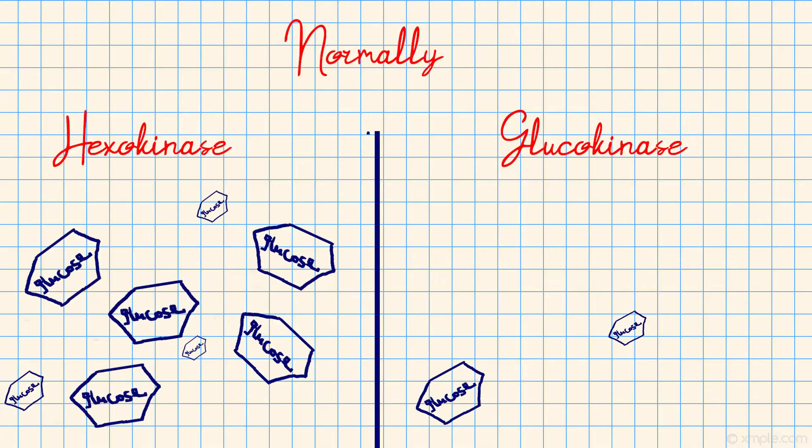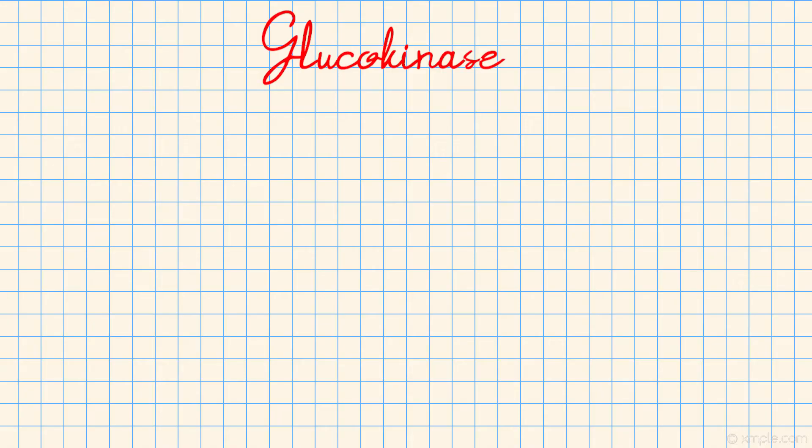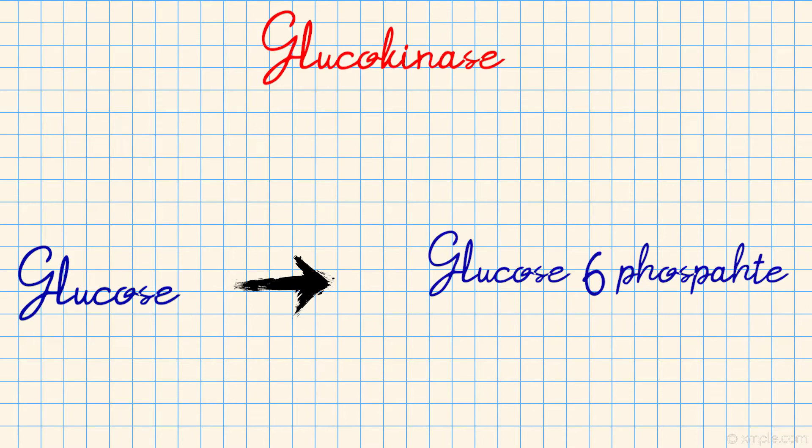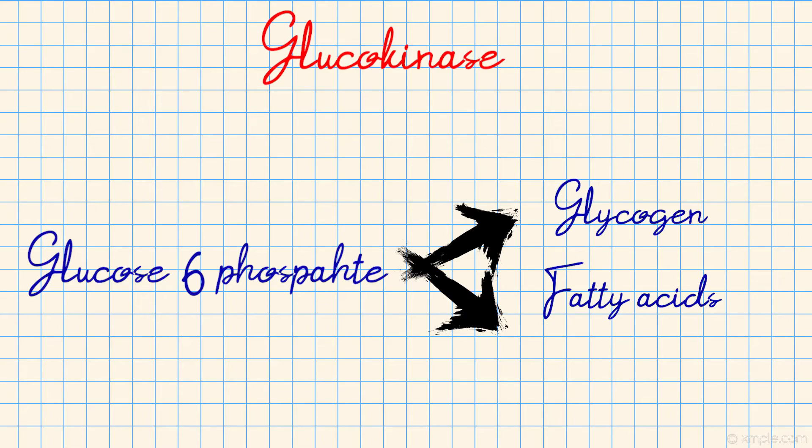However, differently from the muscle, within the liver there is an isozyme — basically a brother from another mother — of hexokinase, called glucokinase. Glucokinase has a lower affinity for glucose than hexokinase. Therefore, for glucokinase to be active, there must be a very high concentration of glucose within the system. When this occurs, glucokinase converts glucose to glucose 6-phosphate, which is then used to make glycogen and fatty acids.